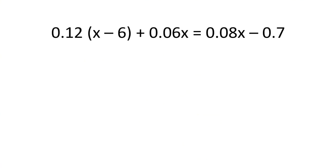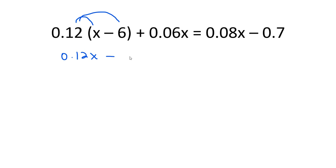Let's try another equation with decimals. Remember the first step is to get rid of any parentheses. I see some parentheses right here, and I have 12 hundredths. So I'm going to distribute that into the parentheses. When I multiply 12 hundredths times x, I get 12 hundredths x. Then I'm going to multiply the 12 hundredths times 6, and I get 72 hundredths.